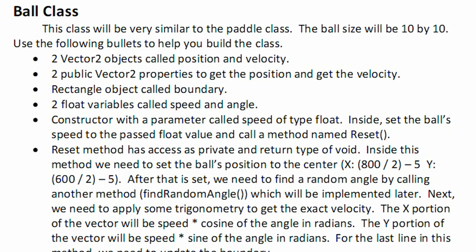And I'm going to call that find random angle, which will be implemented later. Next, we need to apply some trigonometry to the exact velocity. And in order to do the trigonometry, to get the x portion of the vector, you take the speed times cosine of the angle, and the angle needs to be in radians.